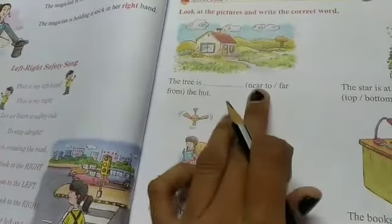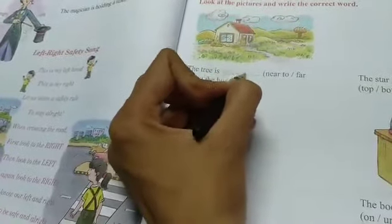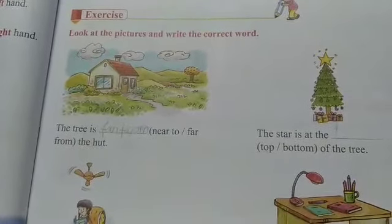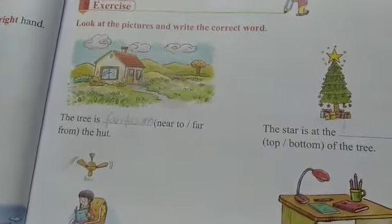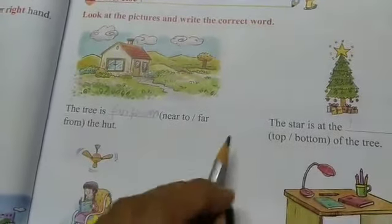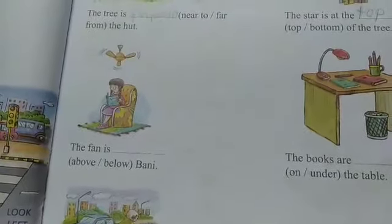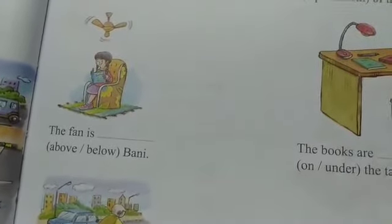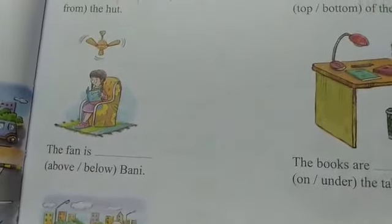The hut is far from. Next: the star is at the top or bottom of the tree. Next: the fan is above or below bunny. Fan joh hai woh bunny ke upar laga hua hai — so fan joh hai woh bunny ke above, yanniki upar laga hai.